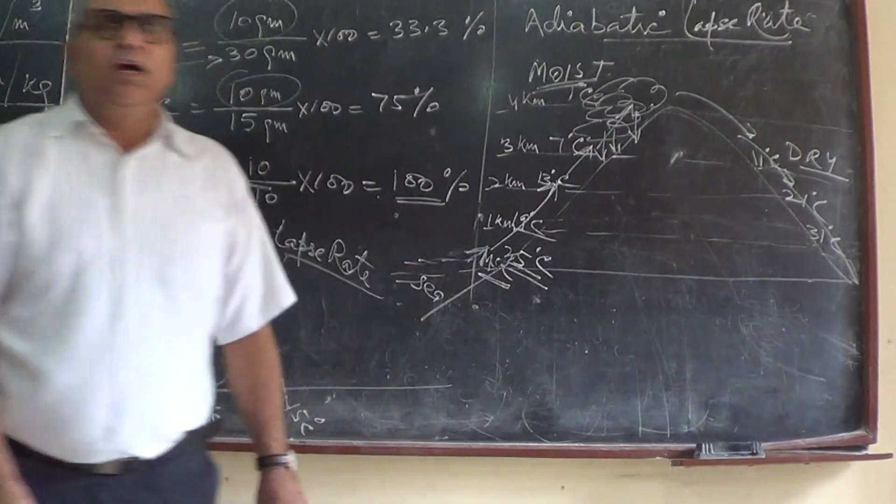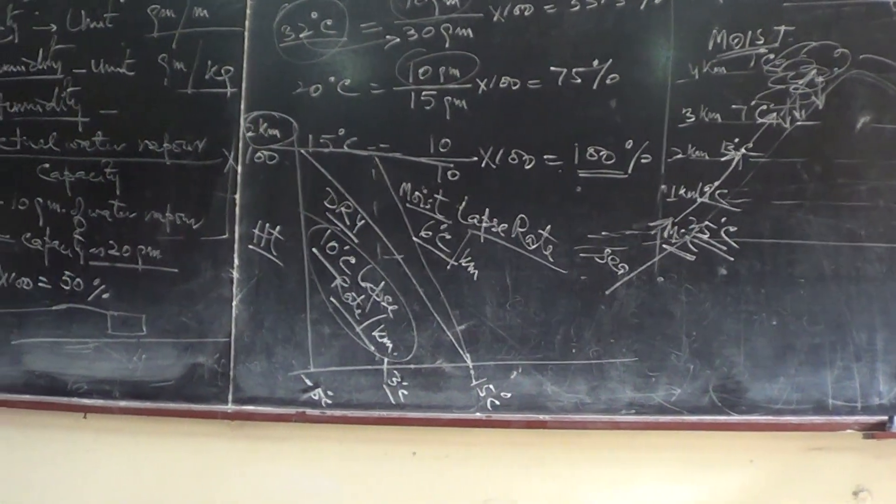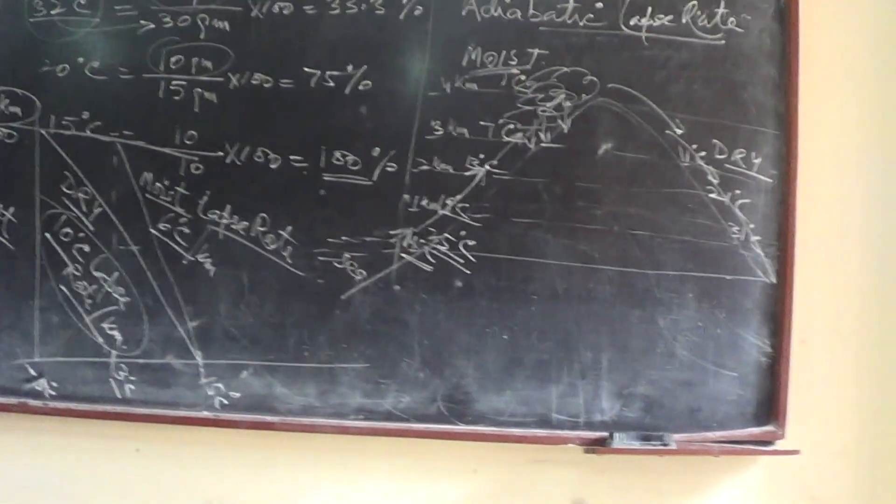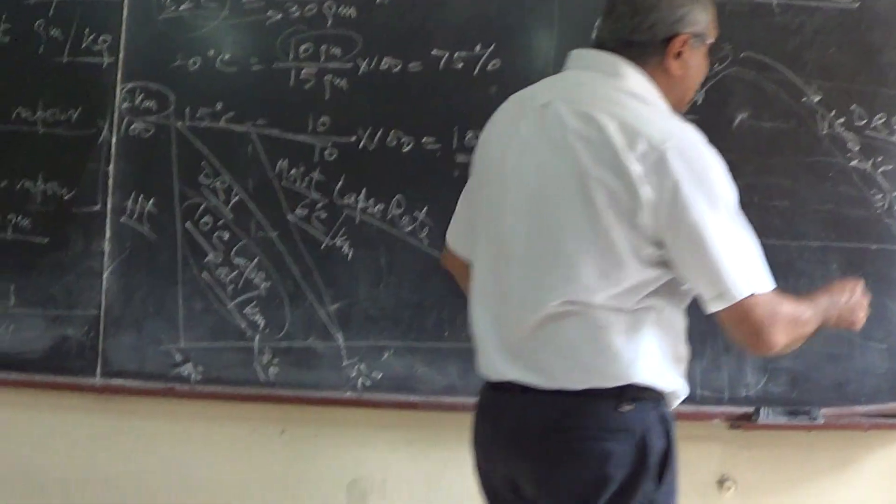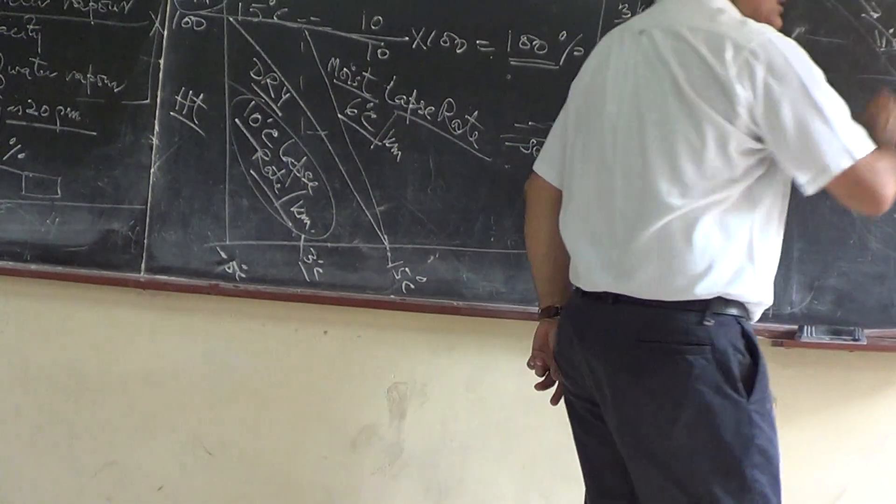Once it becomes dry, its temperature is almost 31 degrees. At sea level, how much is it going to be? 41 degrees.